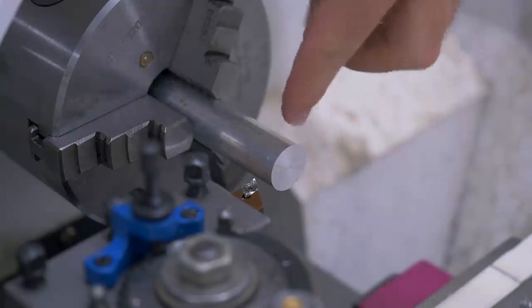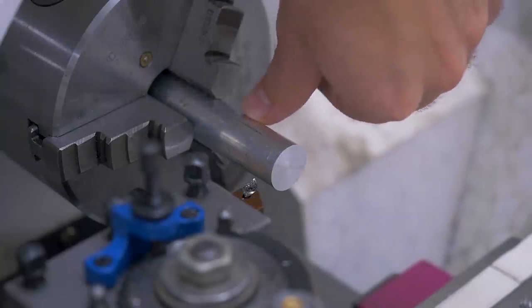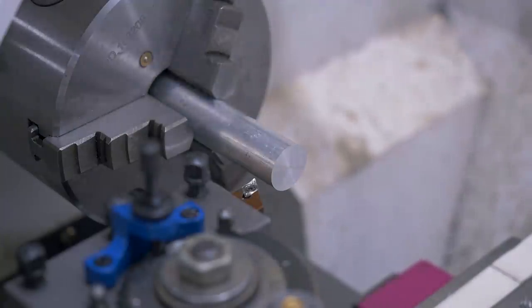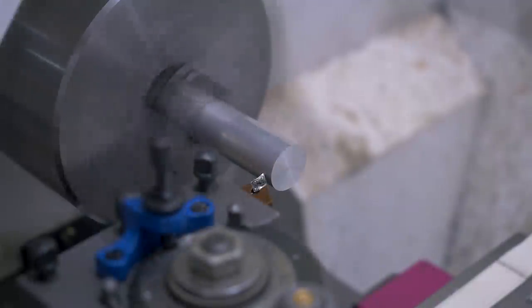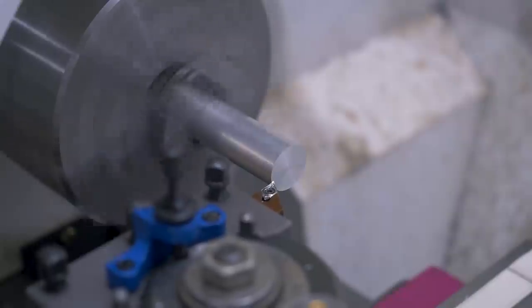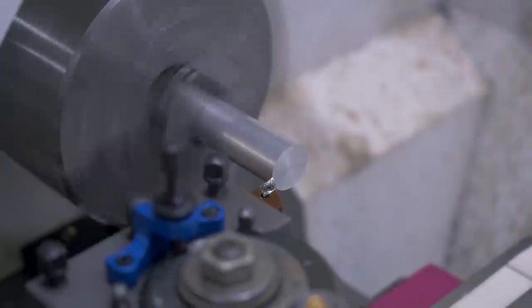After facing, I now first try to turn to a perfect 19mm diameter. I first scratch the material surface and set the dial to zero at that position, and then I can start with turning away half a millimeter.